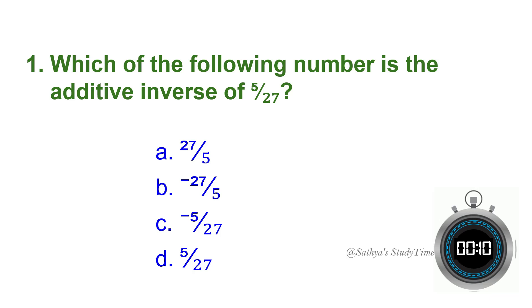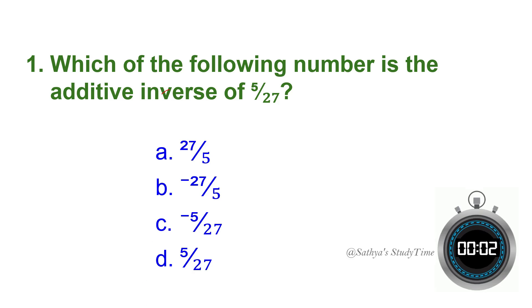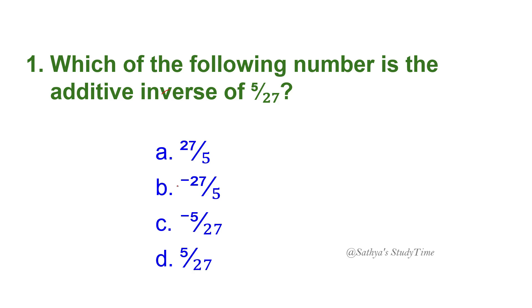First question: Which of the following number is the additive inverse of 5/27? Your time starts now. The answer is minus 5/27. This is the answer for the first question.